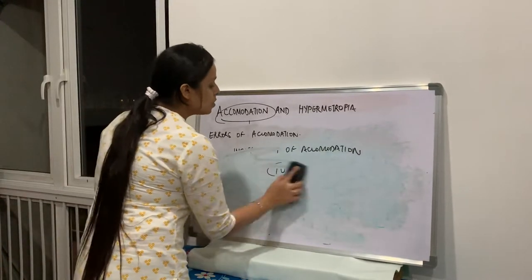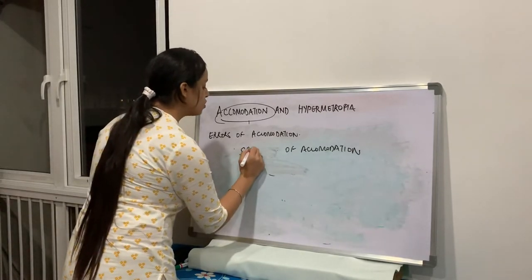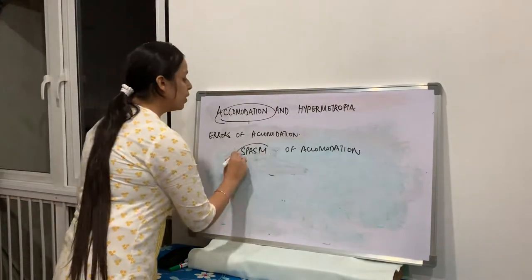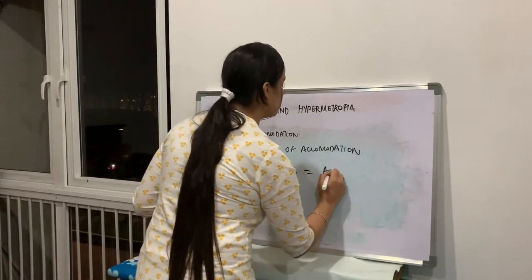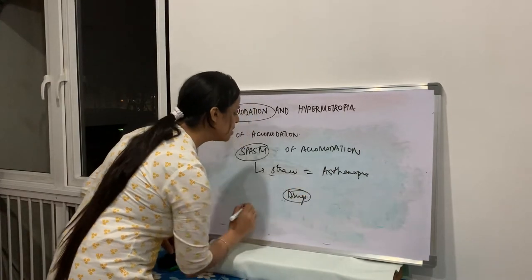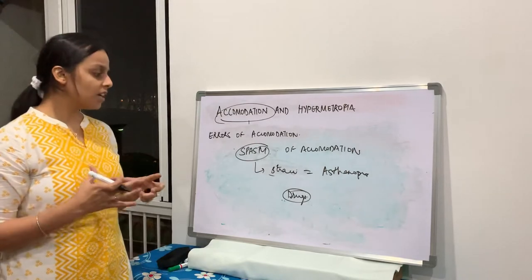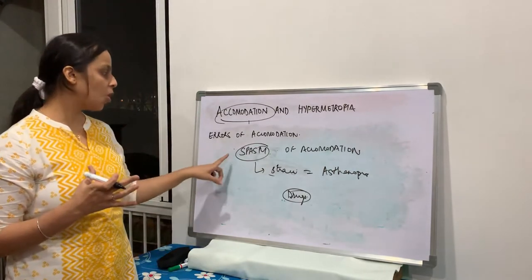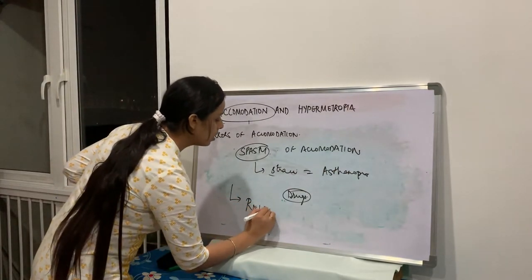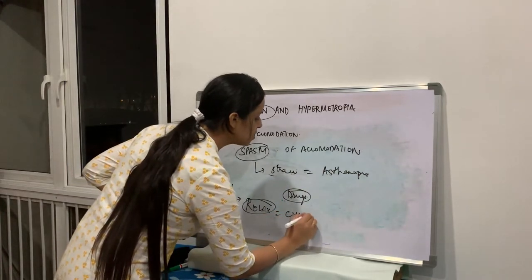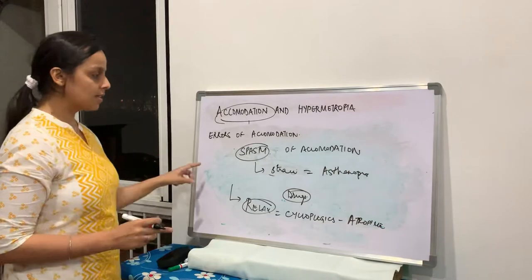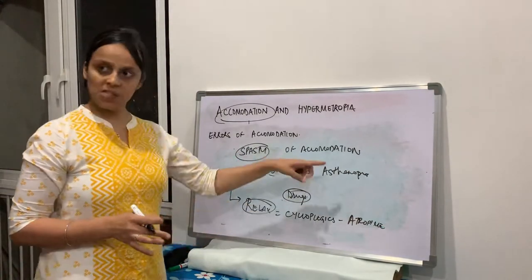The third error is spasm of accommodation — overactive accommodation. When accommodation is over-exerted, there is strain on the eye and symptoms of asthenopia. This is mostly due to drugs or patients doing excessive near work. Treatment: relax accommodation using cycloplegics like atropine, and ask the patient to reduce near work for a few days.